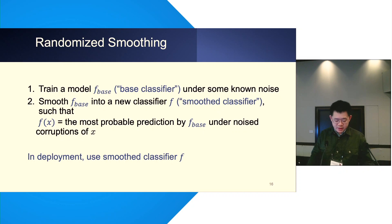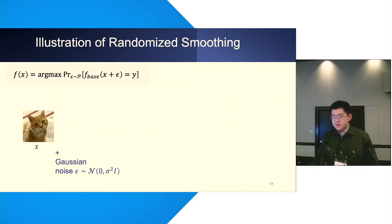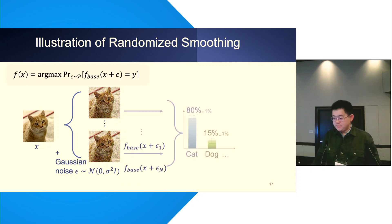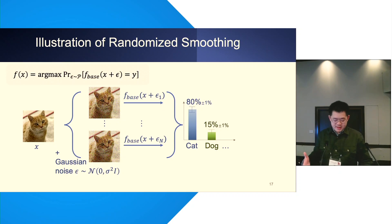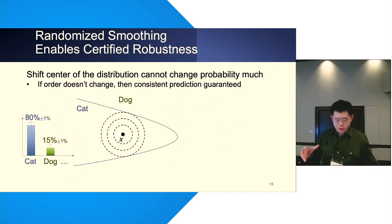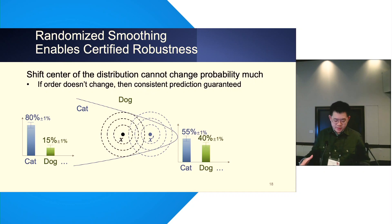In deployment, we use the smooth classifier instead of the original base classifier. For a running example: suppose we have a cat image as X. We first sample several Gaussian noises and add them to the cat image, then let the base classifier give predictions for these noisy cats. Suppose 80% of predictions are 'cat' and 15% are 'dog' — the final prediction is the most probable class, which is 'cat'. Using Gaussian noise and majority voting means that if we slightly shift the center of the distribution, the probability cannot change too much, enabling us to certify robustness against tiny perturbations.